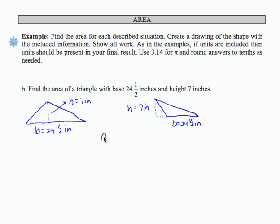Either way, I'm going to be working with the formula area equals 1/2 base times height. So I would set that up as area equals 1/2 times the base, which is 24 1/2 times the height, which is 7. My units are going to be inches squared.